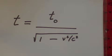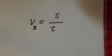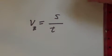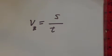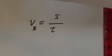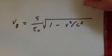Next, velocity is, of course, displacement divided by time. But at relativistic speeds, time dilation has to be taken into account.